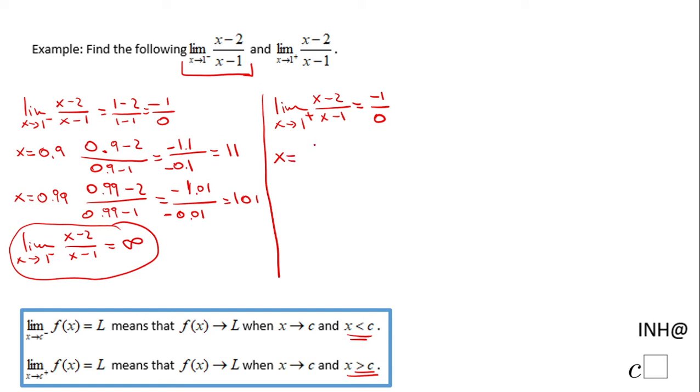In this case, we have x equals a number larger than 1, so I'll say 1.1. We're going to have 1.1 minus 2 over 1.1 minus 1. That will be negative 0.9 over 0.1, which equals negative 9.